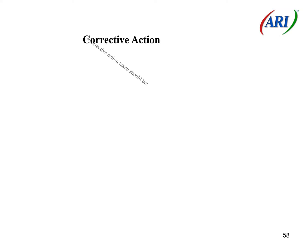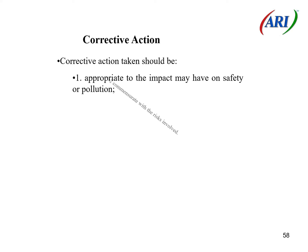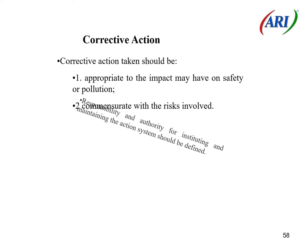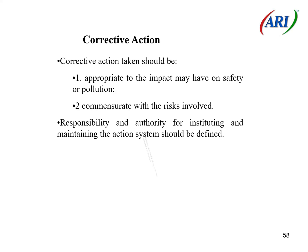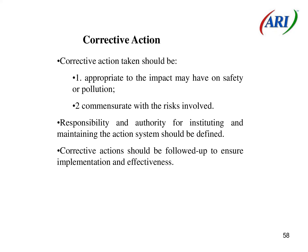Implement the change. Corrective action taken should be: 1. Appropriate to the impact it may have on safety or pollution, 2. Commensurate with the risks involved. Responsibility and authority for instituting and maintaining the action system should be defined. Corrective actions should be followed up to ensure implementation and effectiveness.